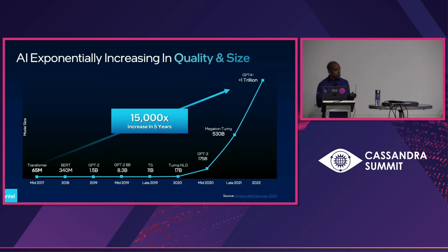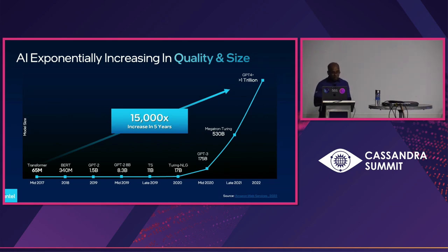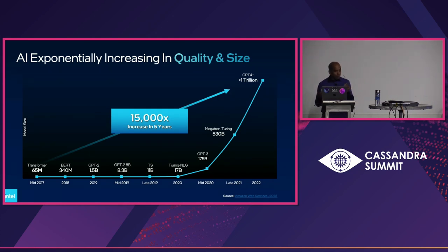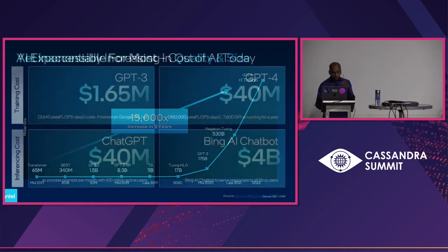Let's take a look at what has happened recently. AI is exponentially increasing in both quality and size. The first transformer model was done back in 2017, about 65 million parameters. But if you see the transition from GPT-2 to 3 to 4, we're looking at about a trillion parameters. This was in 2022, and it's only going to grow more. In five years only, that's about 15,000 times growth. Where is this going to stop? What is the point of diminishing returns, and how do you get that compute?